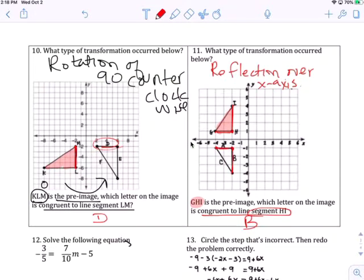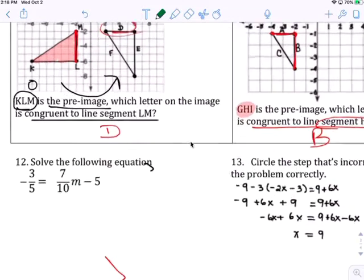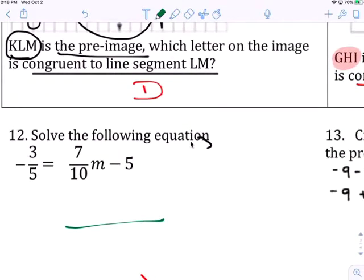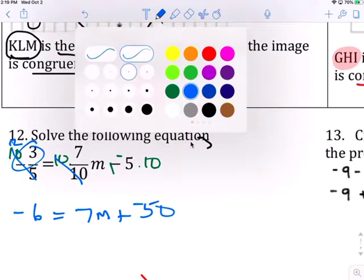This is G, H, I is the pre-image. Which letter of the image is congruent to line segment H and I? Letter B. And then number 12, we've done a lot of this. Least common denominator is 10. So we multiply by 10, times 10, times 10, times 10, additive inverse. 5 into 10 is 2 times. This is a negative, so negative 6 equals 7M plus a negative 50.